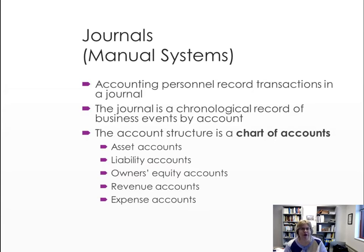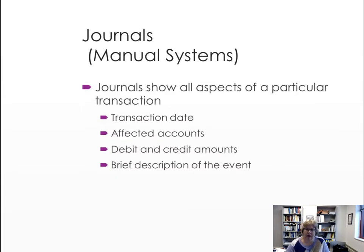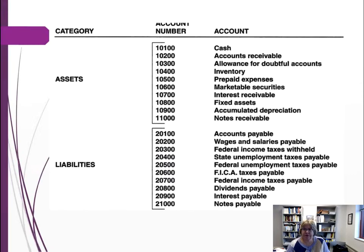Accounts are structured through a chart of accounts, which lists all accounts in numerical order. Most charts of accounts start with assets, liabilities, then owner's equity, followed by revenue and expenses — mirroring the order of our financial statements: first the balance sheet, then the income statement. Even sub-accounts under assets are usually listed in the same order. Each journal entry must show a date, at least two accounts, a debit and credit, and a brief description.